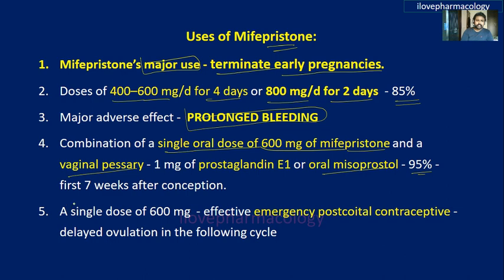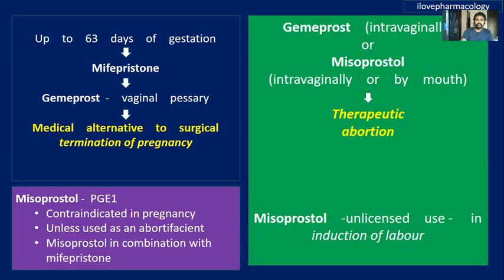A single dose of 600 mg mifepristone can also be used as an effective emergency post-coital contraceptive, which delays ovulation in the following cycle. Up to 63 days of gestation, mifepristone can be given with gemeprost as an effective medical alternative to surgical termination of pregnancy.